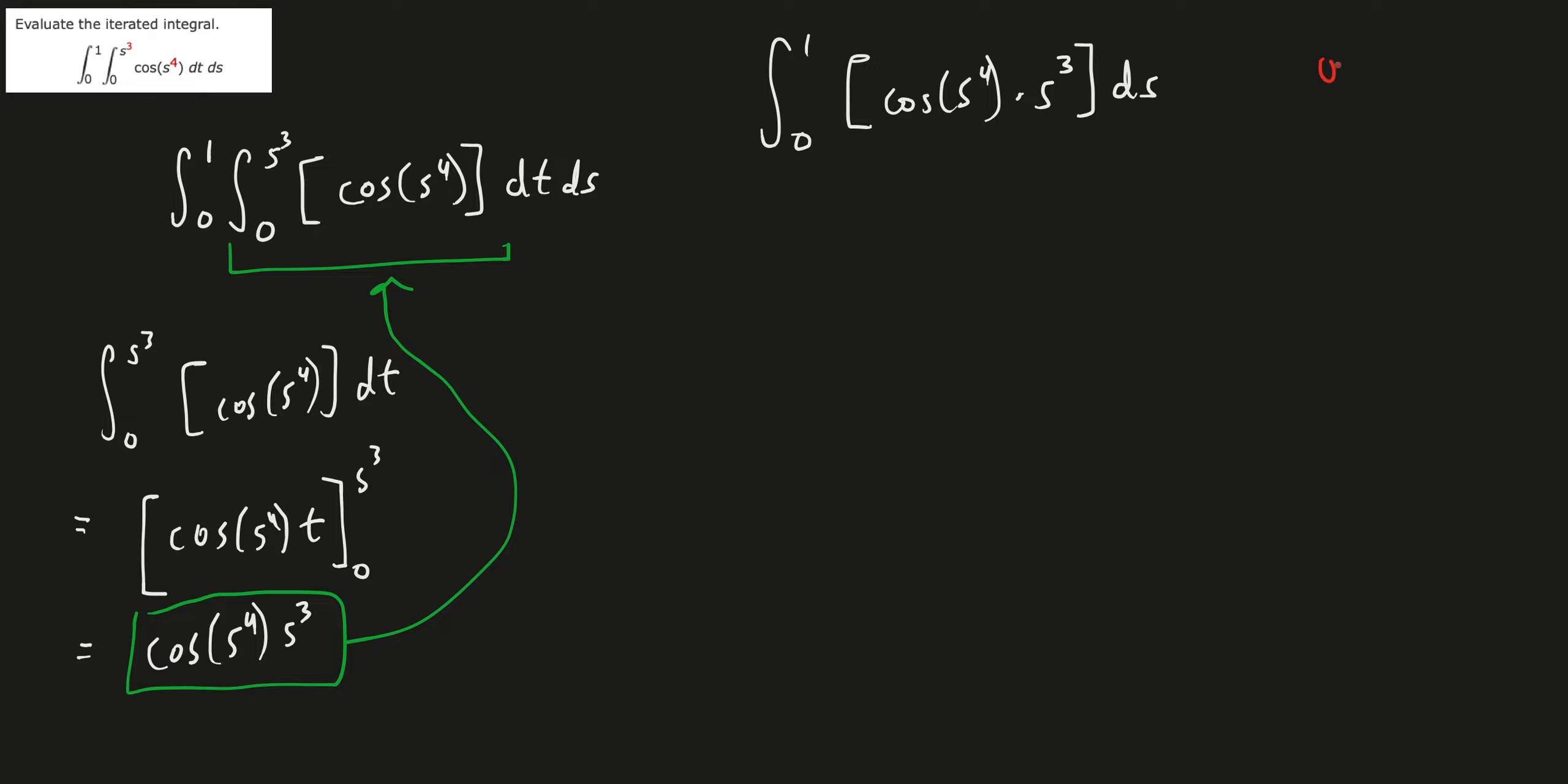We can use u substitution for this one. I would write it out to show my work and it helps me. So if u is s to the fourth, du over ds is 4s to the third power, which means that du, if you multiply this ds on both sides, you will end up with du is 4s cubed ds.